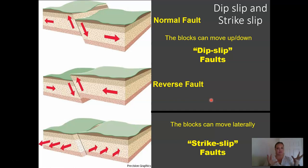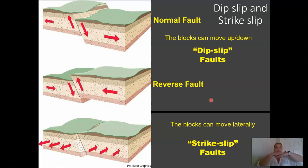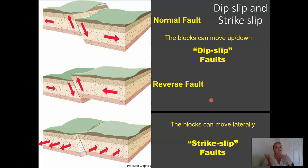To sum up: we have dip-slip faults — normal and reverse — and strike-slip faults. Normal fault is from tension; the hanging wall moves down. Reverse faults are from compression; the hanging wall moves up. Strike-slip faults move laterally, side-by-side, with right and left lateral varieties. That's it for faults and folds. We'll move into earthquakes in the next video — see you guys there. Bye!